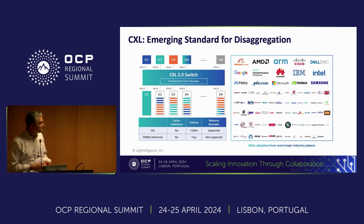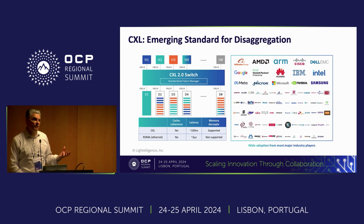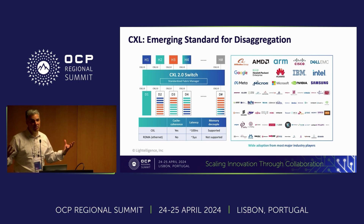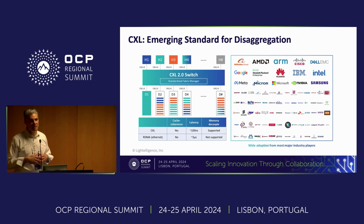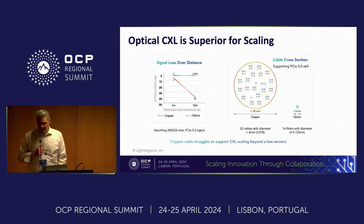CXL gives us what we need in terms of a low-latency memory interconnect. With the advent of CXL 2.0 and 3.0, you can now have hierarchical switching, so you can actually build a real compute-to-memory fabric using multiple switches and multiple racks with thousands of endpoints.